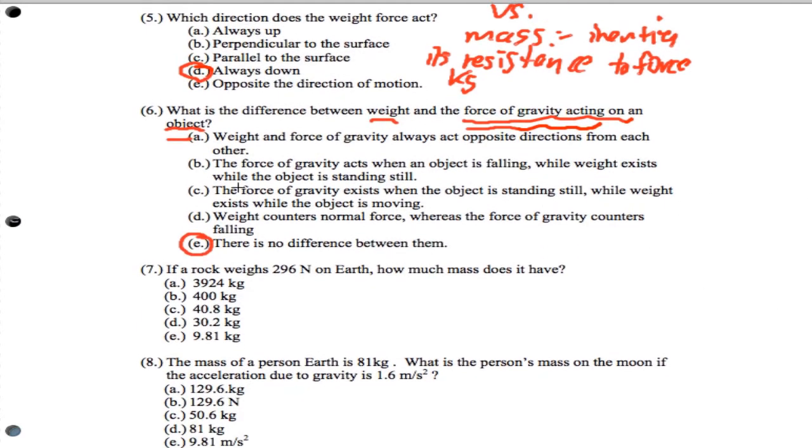Question number seven. If a rock weighs 296 newtons on Earth, how much mass does it have? This is a simple calculation where weight equals mg. So we have 296 equals m times 9.8 meters per second squared. We solve and we get 30.2.